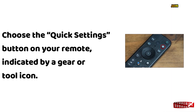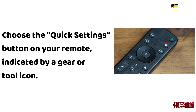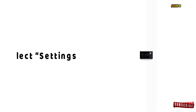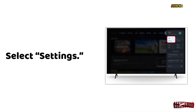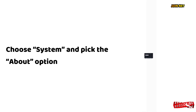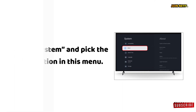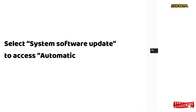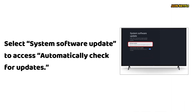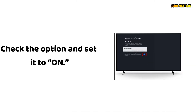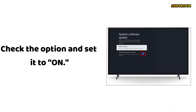Choose the Quick Settings button on your remote, indicated by a gear or tool icon. Select Settings. Choose System and pick the About option in this menu. Select System Software Update to access Automatically check for updates. Check the option and set it to On.